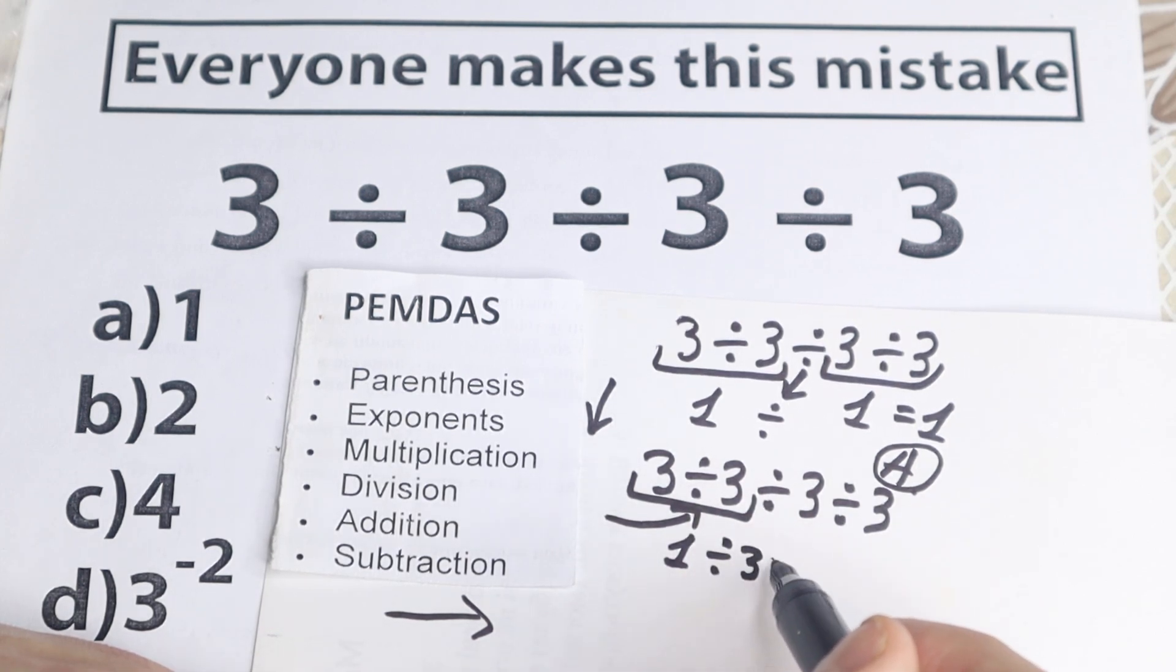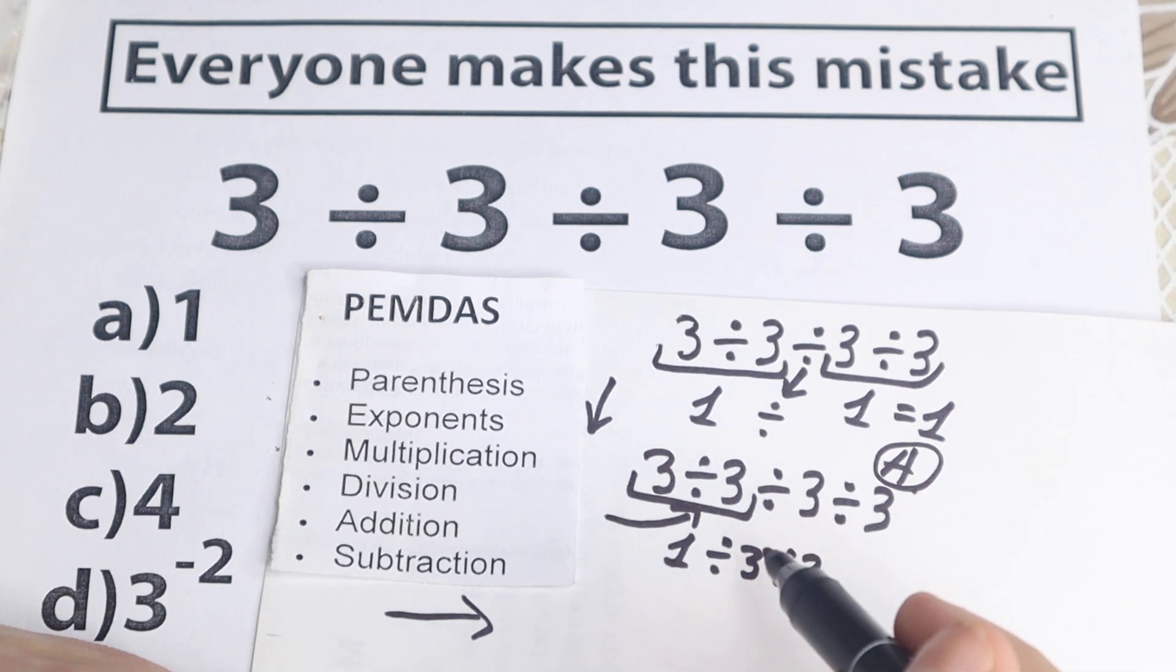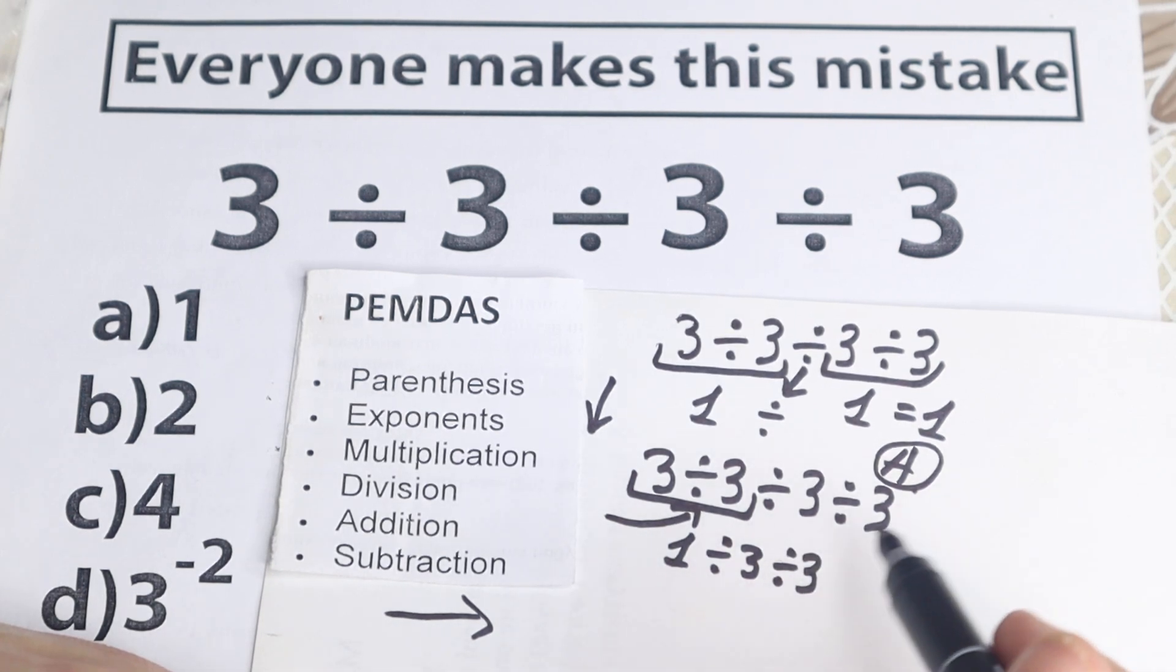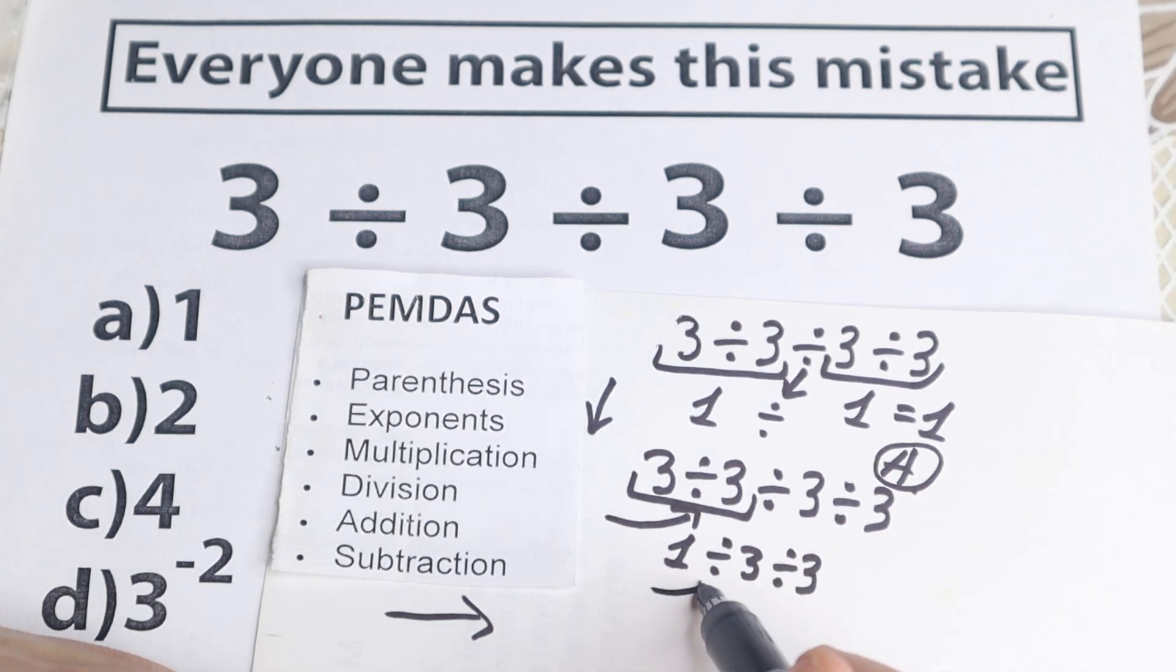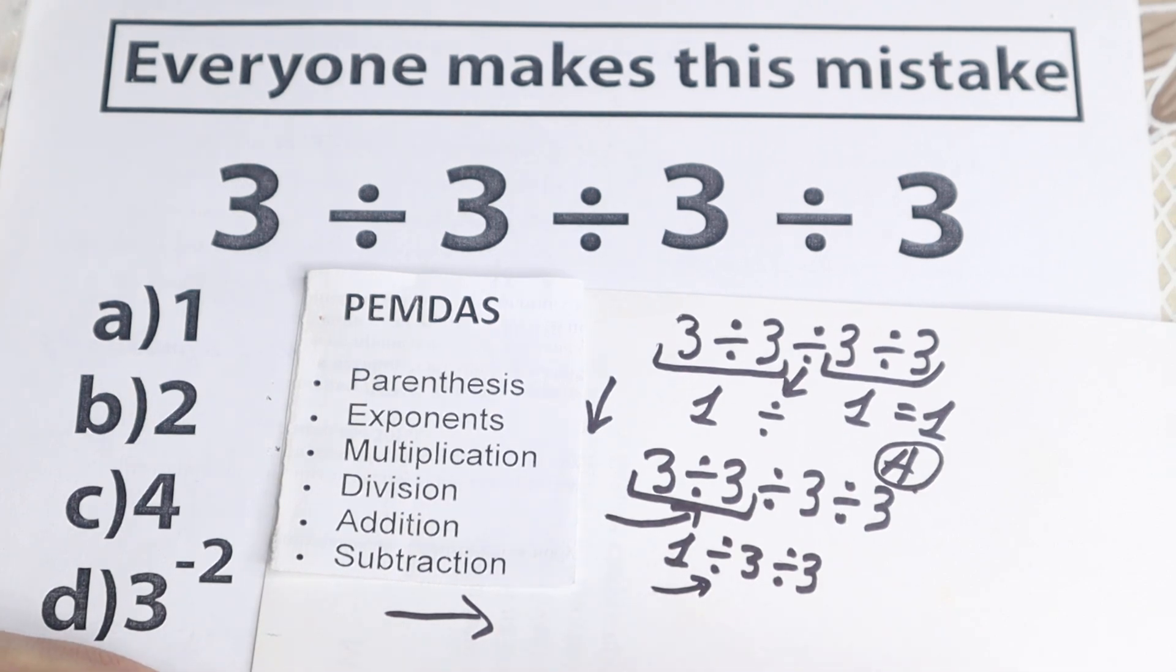1 divided by 3, and divide it by 3. What are we going to do next? We have the same case, we have division, so we need to scan what is the first sign from left to right. The first sign from left to right is this division once more. So we need to divide it first.